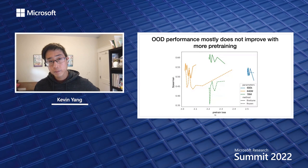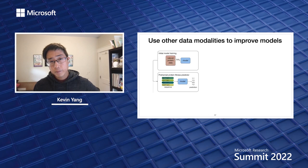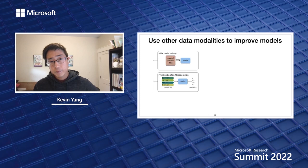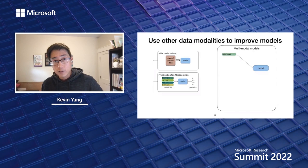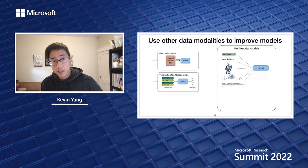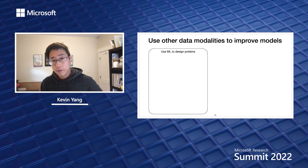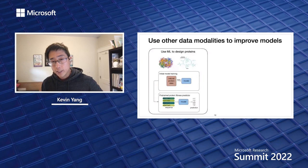Our proposal is to use other data modalities to improve models. We want to do pre-training and fine-tuning, and beyond sequence alone, we know many other things about proteins: functional annotations, structure, sometimes the substrate or ligand, free text from papers, and everything in proteins is ultimately determined by biophysics. To summarize: we want to use ML to design proteins for therapeutics, for new chemistry, and for many other things. We want to use existing data to make better predictions, but pre-training on sequences isn't good enough — so we're proposing to use multimodal models. Thank you for your time.